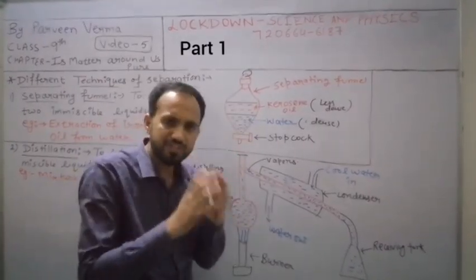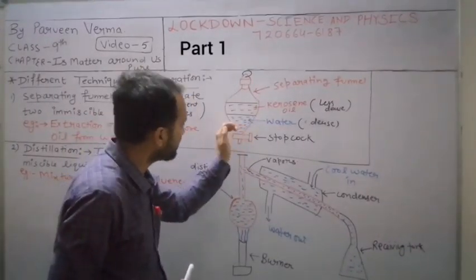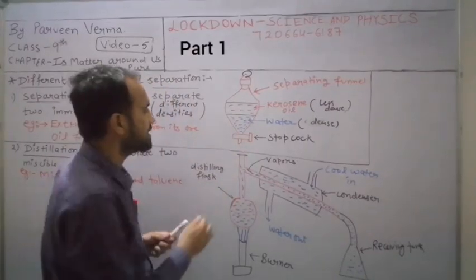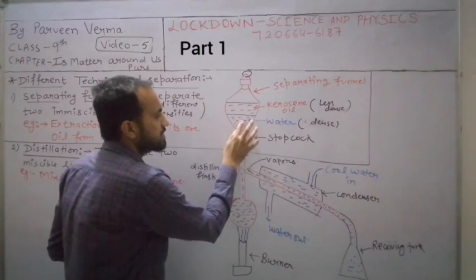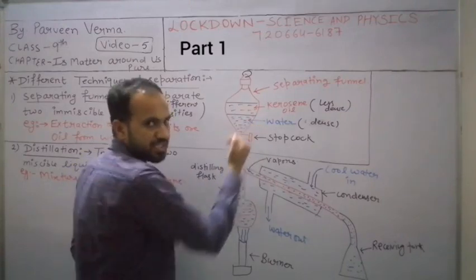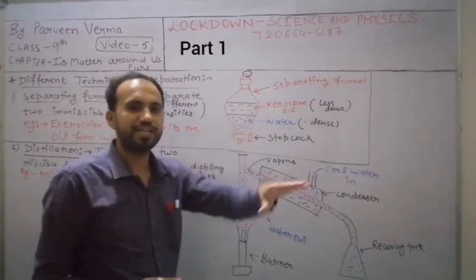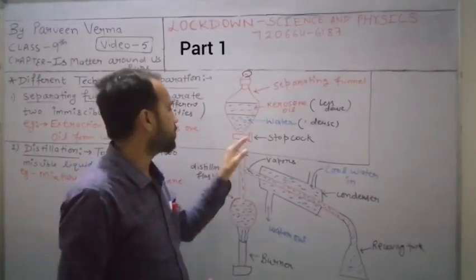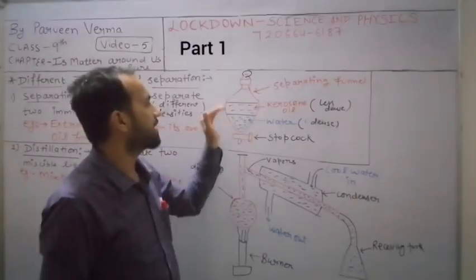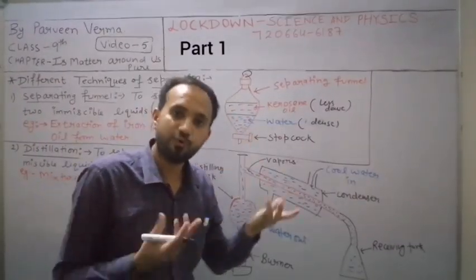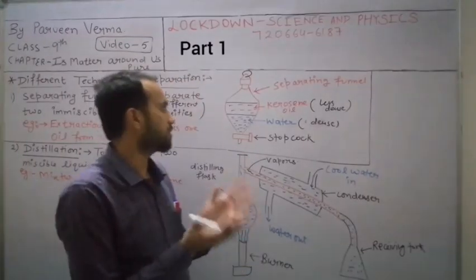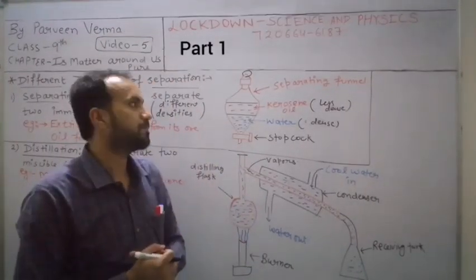Then we will open the stopcock and water will start flowing slowly through the narrow opening. We place a container below to collect the water. As water flows out, the kerosene oil will also move down. Once all the water is collected in the container, we close the stopcock again. Now only oil remains in the separating funnel and water has been separated into the container.